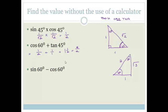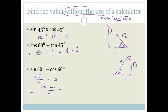Sin 60 minus cos 60: sin 60 is opposite over hypotenuse, so it's root 3 over 2, minus cos 60 which is adjacent over hypotenuse, which is 1 over 2. All you do is write it with a common denominator: root 3 minus 1 all over 2. We leave it like this because it says without the use of a calculator.